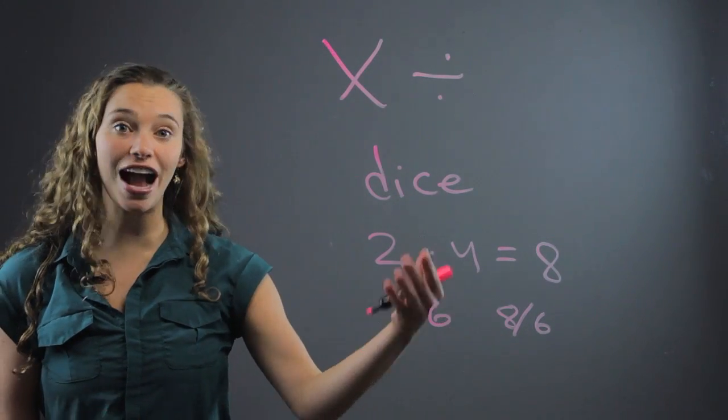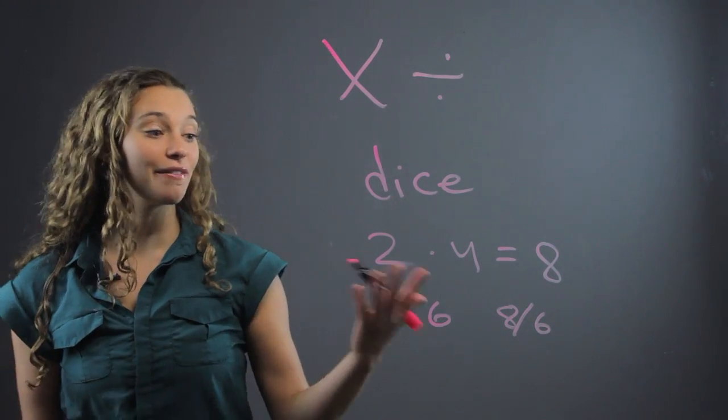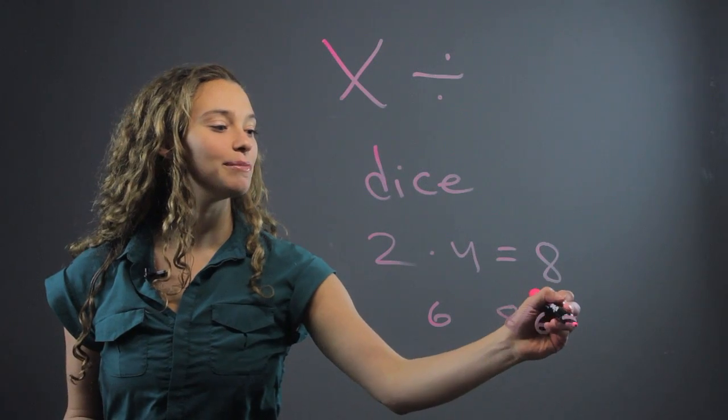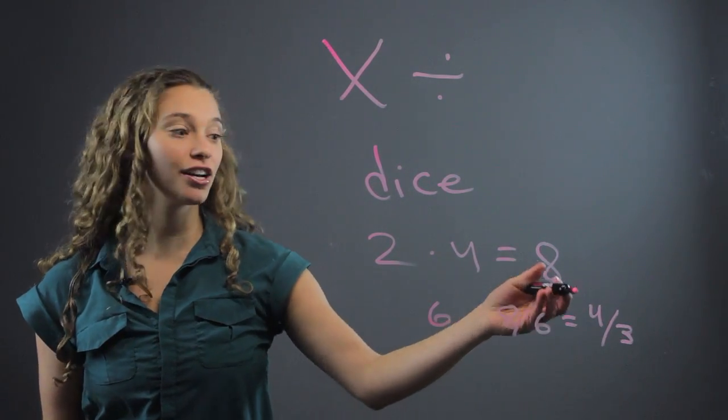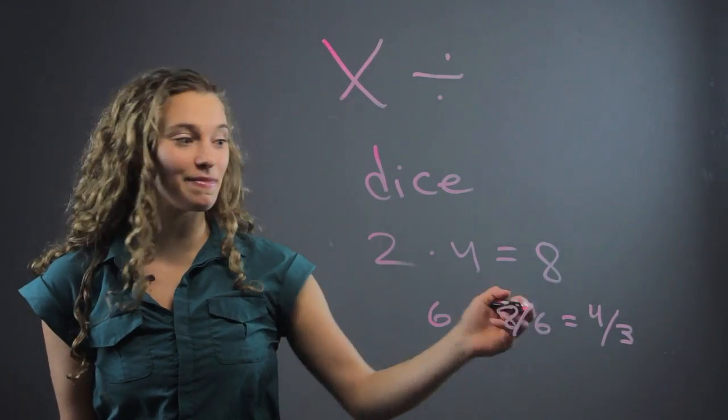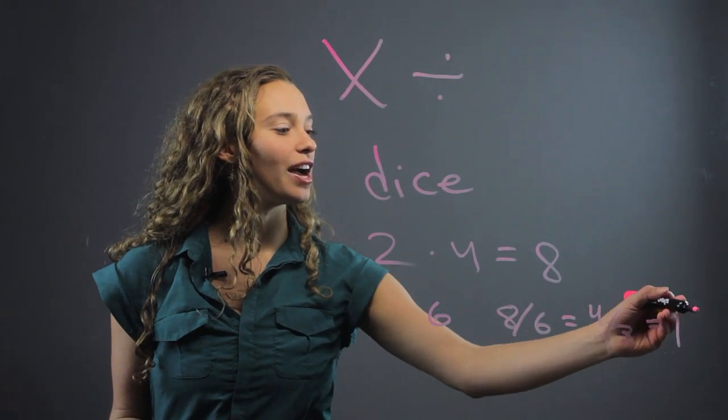That gets a little more interesting. Then they have a fraction. Maybe you can help them learn how to reduce the fraction to be four over three, and even turn the improper fraction into a mixed number, one and one-third.